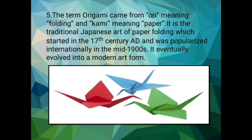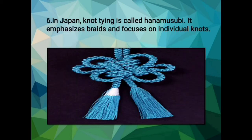The term origami comes from 'ori' meaning folding and 'kami' meaning paper. It is the traditional Japanese art of paper folding, which started in the 17th century AD and was popularized internationally in the mid-1900s, eventually evolving into a modern art form. In Japan, knot tying is called Hana Musubi, which emphasizes braids and focuses on individual knots.